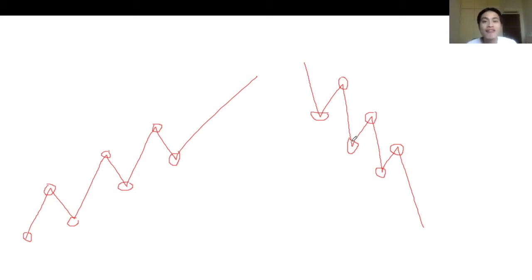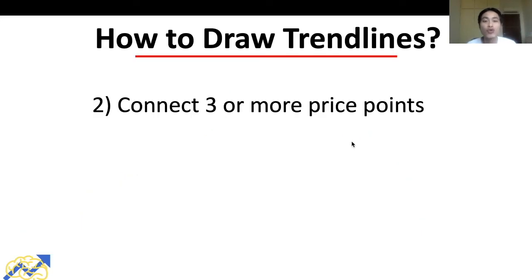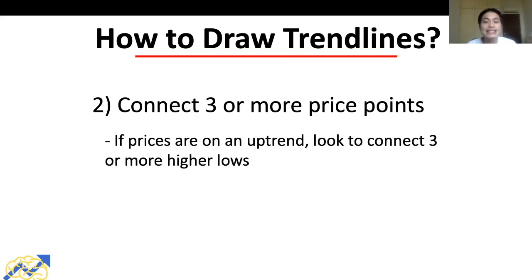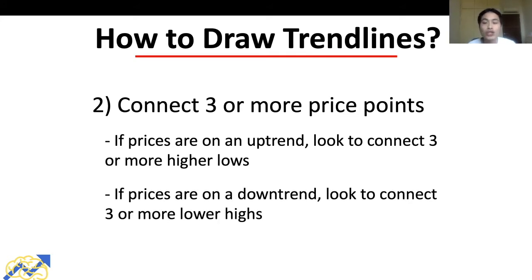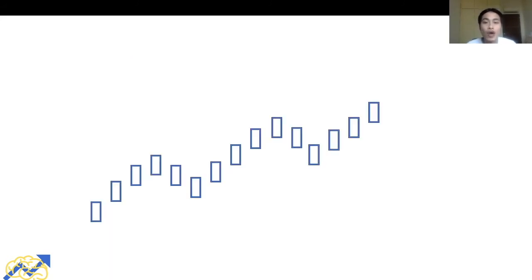That is how we identify an uptrend and a downtrend — that is the first step to drawing a trend line. The second step is to connect three or more price points. In an uptrend, we connect three or more higher lows; in a downtrend, we connect three or more lower highs.